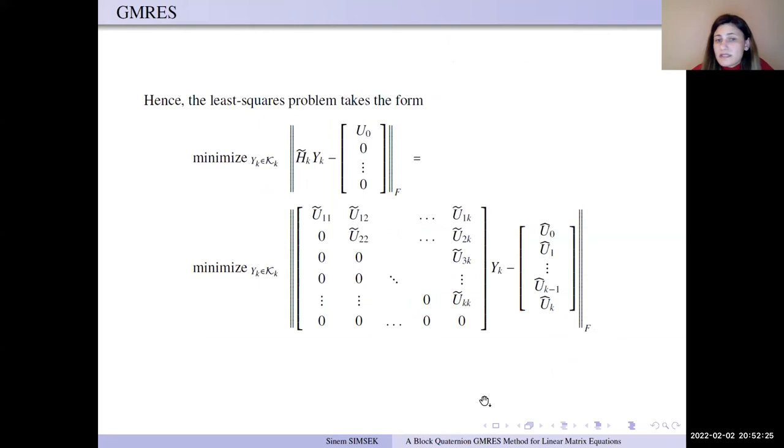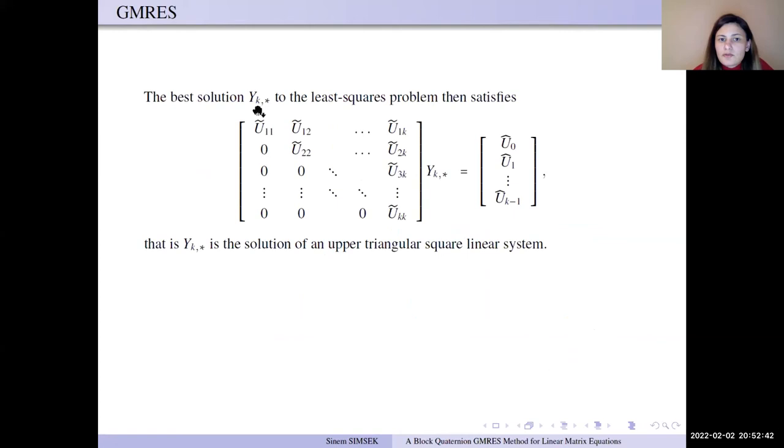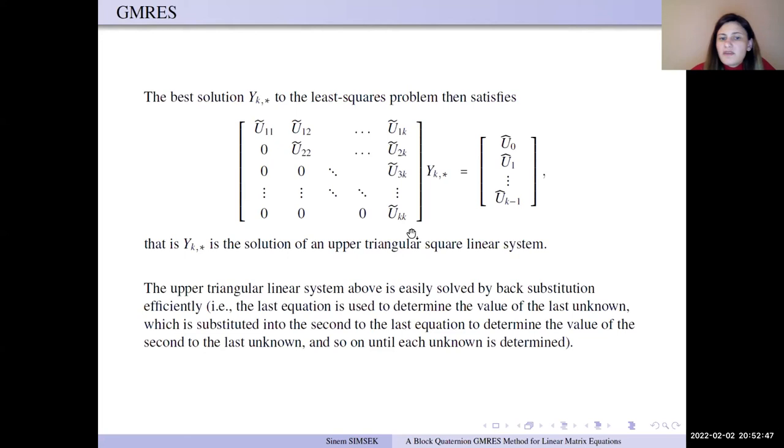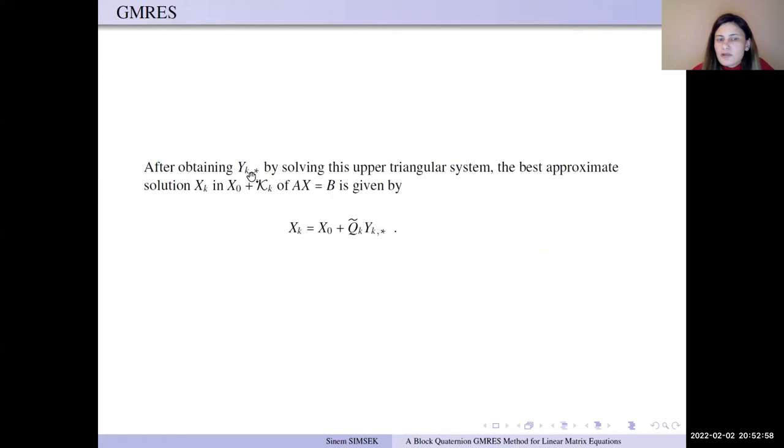Hence, the least squares problem takes the form of this minimization. It can be seen that this is a triangular system. The best solution Uk* to the least squares problem satisfies this triangular system, and we can solve this system by back substitution efficiently. After obtaining Uk* by solving this upper triangular system, the best approximate solution xk of Ax equals b is given by this form.